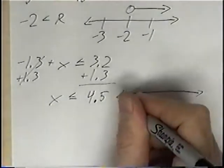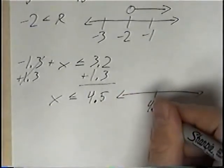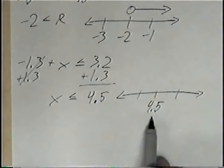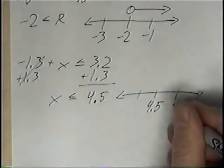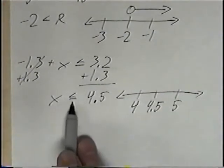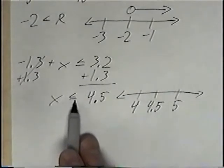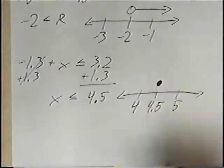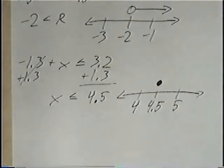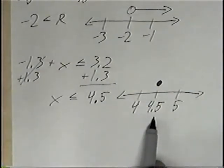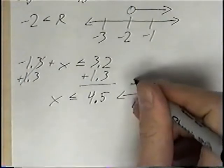Drawing the number line, we put 4.5 in the middle, with one number to the right and one to the left — 5 on the right and 4 on the left. Less than or equal to: the equal to means it is a solid or closed dot. X is less than or equal to 4.5 means we want the smaller numbers from 4.5, and smaller numbers go to the left.